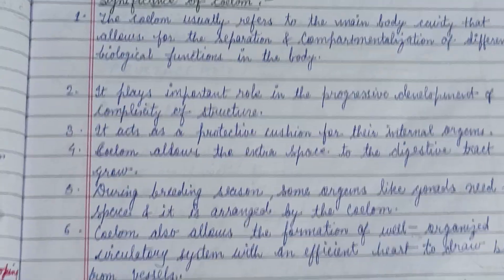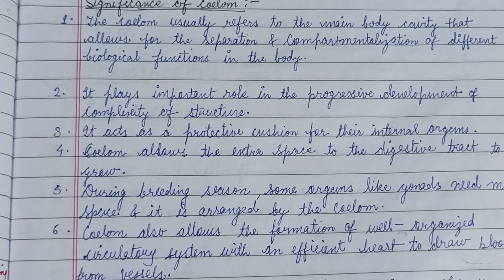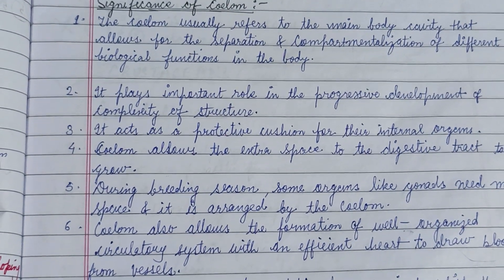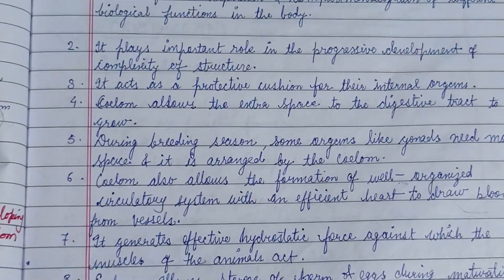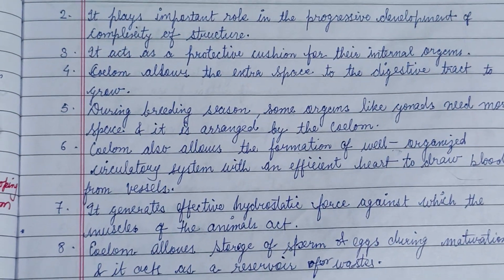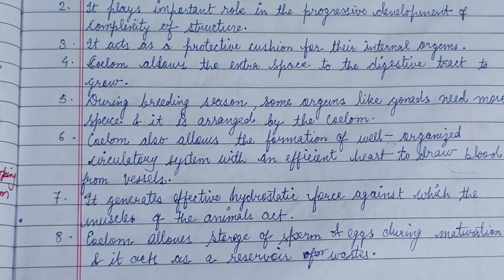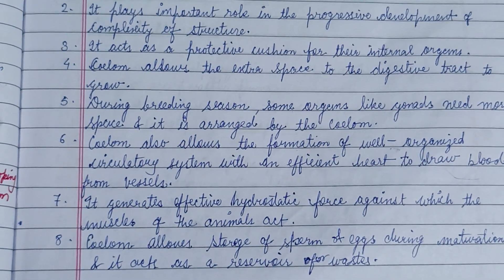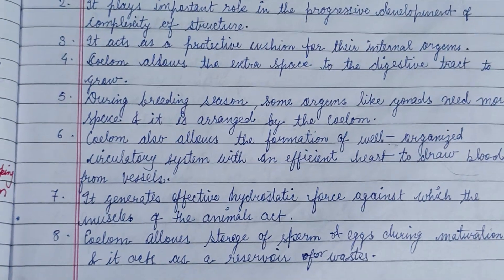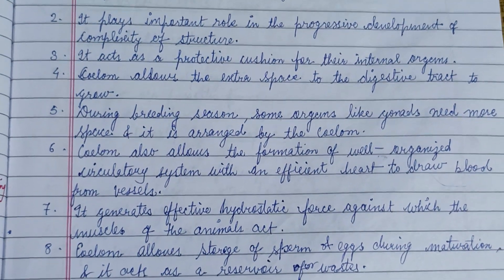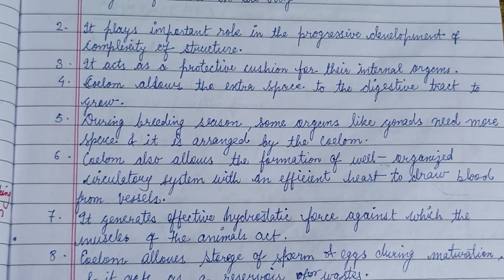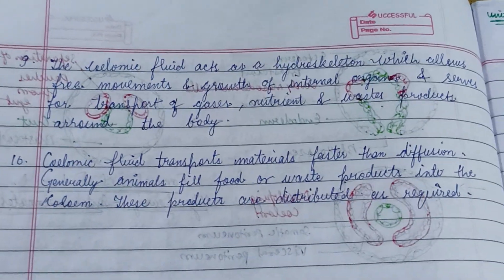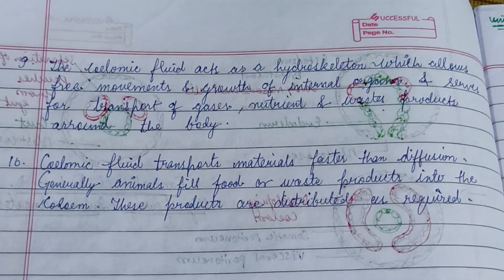The significance of the coelom is as follows: the coelom refers to the main body cavity that allows for compartmentalization of different biological functions. It plays an important role in the progressive development of structural complexity, generates effective hydrostatic force against which the muscles of the animal act, and allows storage of sperm and eggs during maturation, also acting as a reservoir for waste. That covers the coelom, its structure, and its types.